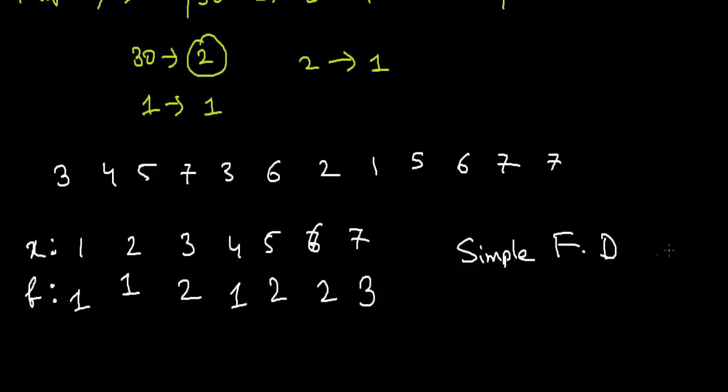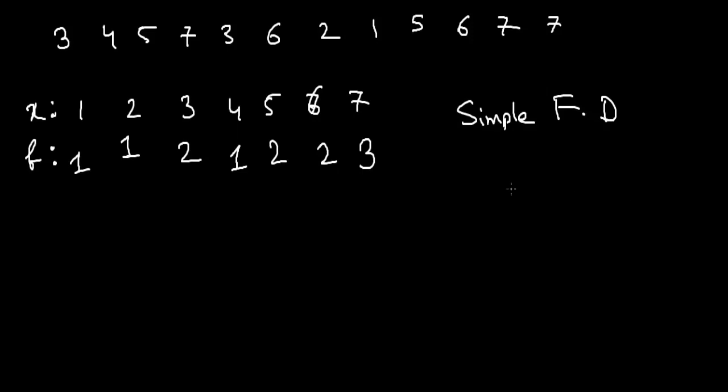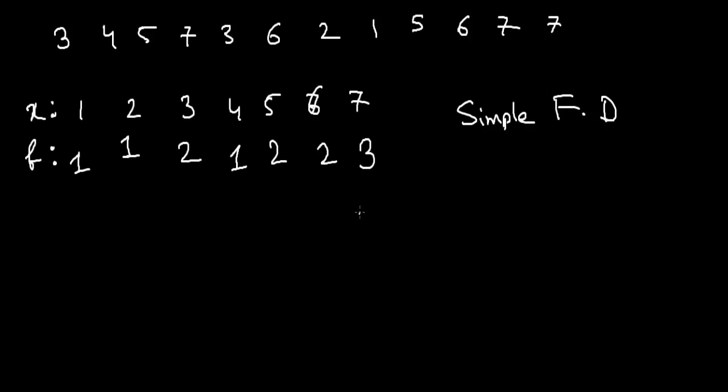Now there is something called group frequency distribution. This will look something like this. Suppose we are considering marks and frequency. Marks can be 0 to 10, 11 to 20, 21 to 30.